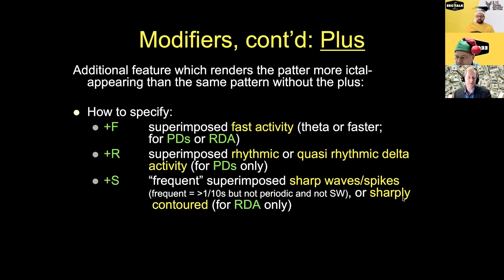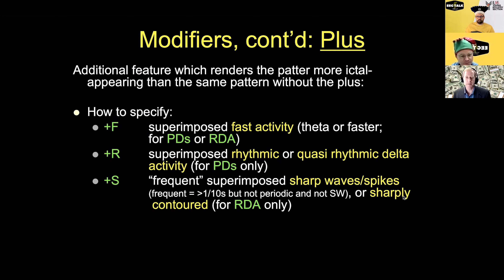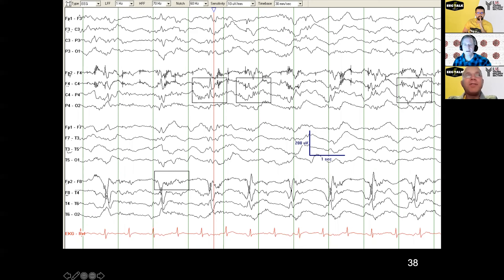Moving on to plus modifiers — this is an important one, as it's been shown to have real clinical correlations and has been associated with outcomes. This is something on top of the basic pattern that makes it seem even closer to a seizure. You can have superimposed fast activity (+F), superimposed rhythmicity (+R), and superimposed sharp waves or spikes (+S), and you can have more than one of those pluses.